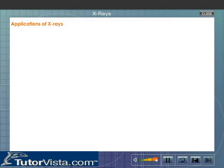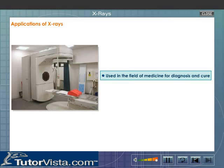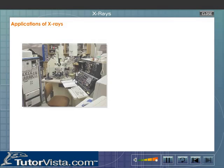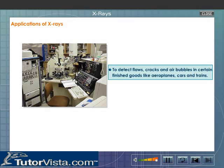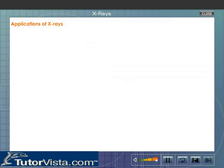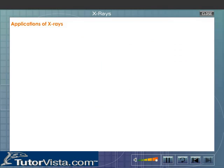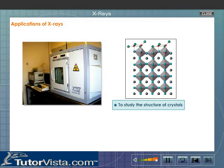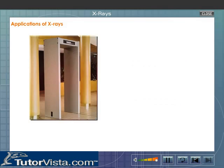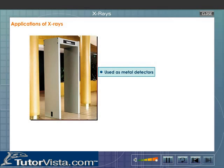X-rays are used in the field of medicine for diagnosis and cure, to detect flaws, cracks and air bubbles in certain finished goods like aeroplanes, cars and trains, to differentiate between real and fake diamonds, to study the structure of crystals, and as metal detectors.